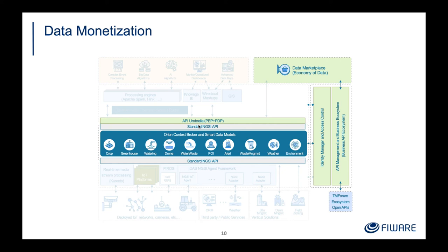The access to the context broker is managed by the PEP and PDP for access permissions. In the scenario we are following today, we are using software implementing both, which is called API Umbrella. But if you prefer using Wilma and AuthzForce or the policy decision point integrated within Keyrock, that is also a possibility. I'm not going to go deep on FIWARE architecture securization, because there is already a very nice webinar published on YouTube. If you want a deeper look at how to secure the different APIs within FIWARE, you can watch that webinar.